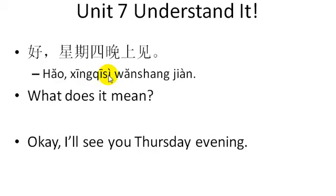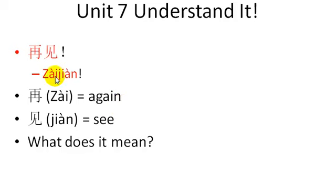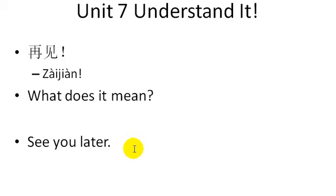见. And, Baying Ai says 再见. Now, 见 you know means see. 再 means again. So, again see. So, 刚文中 says 好 星期四 晚上见, I'll see you Thursday evening. And then, Baying Ai ends the conversation by saying 再见, again see. So, I think the meaning is clear, but what's a better English way of saying that? If you came up with see you later, you're correct.